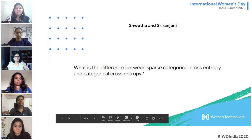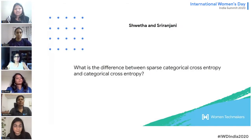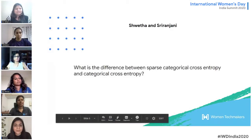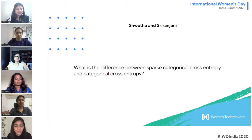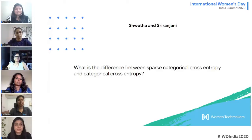The next question for Shweta and Sridanjani is: what is the difference between sparse categorical cross entropy and categorical cross entropy? Cross entropy is a metric we try to optimize for classification problems in machine learning.